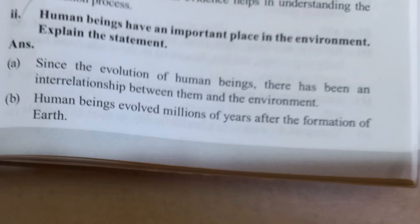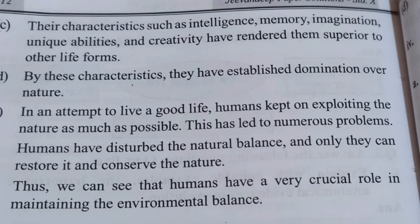Answer the following question: Human beings have an important place in the environment — explain the statement. Since the evolution of human beings, there has been an interrelationship between them and the environment. Human beings evolved millions of years after the formation of the earth. Their characteristics such as intelligence, memory, imagination, unique ability, and creativity have rendered them superior to other life forms, by which they established domination over nature.